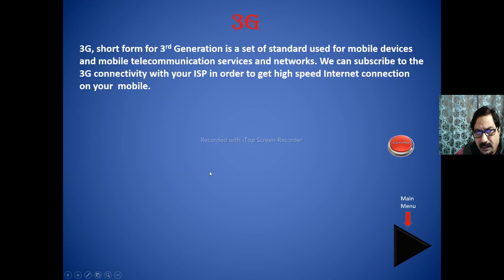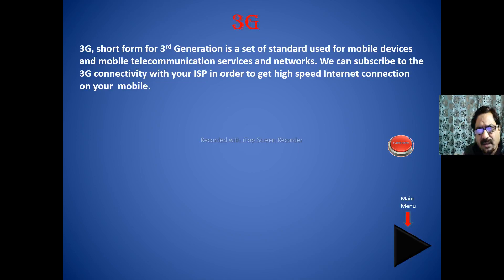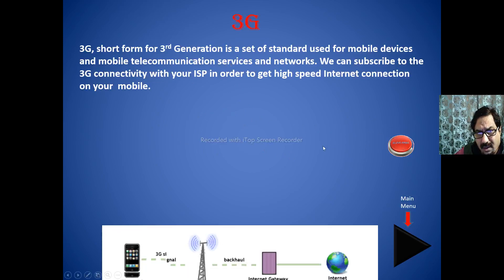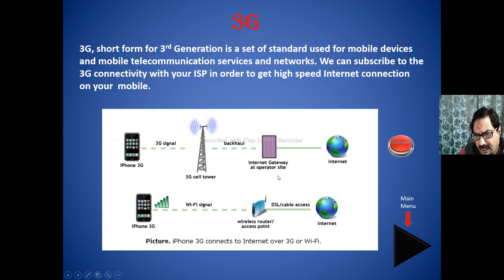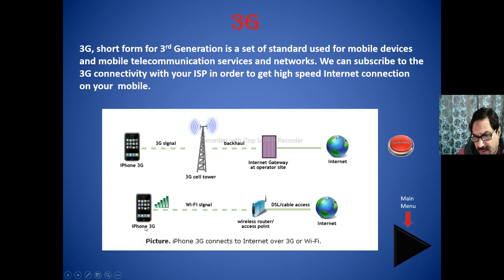The fourth one is 3G. 3G is short for third generation — it is a set of standards used in mobile devices and communication services. You subscribe to 3G connectivity with an ISP in order to get an internet connection. You might have seen a lot of towers on the roads — with the help of those towers and their signals you get access. There are gateways in between, and from those you get the internet connection. That's how phones access information through those signals.